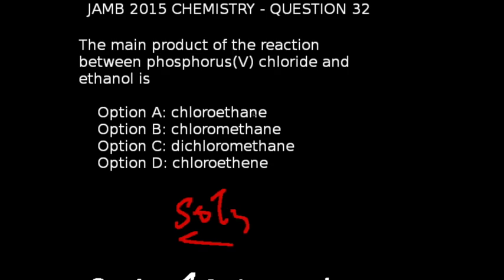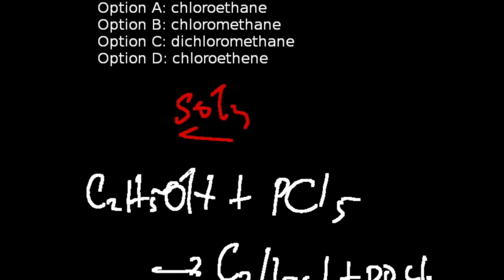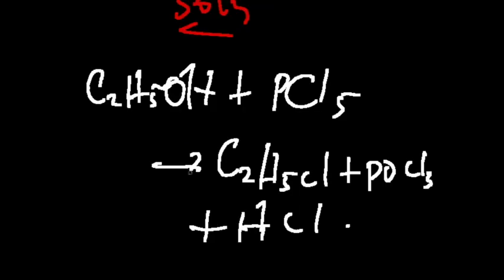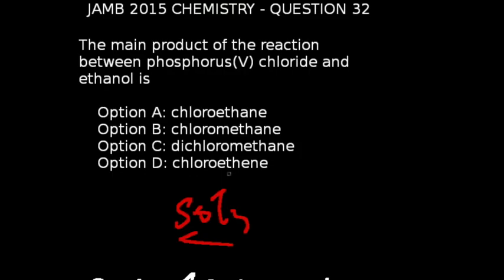Question 32 of JAM 2015 chemistry: The main product of the reaction between phosphorus pentachloride (PCl₅) and ethanol is — writing the equation: ethanol reacting with phosphorus pentachloride gives chloroethane, POCl₃, and HCl. The major product is chloroethane. The correct answer is option A.